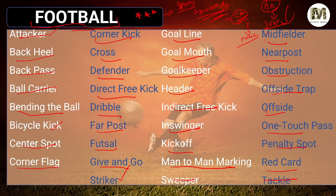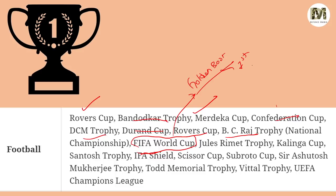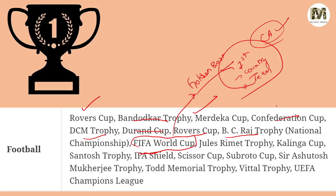Football cups and trophies: Rovers Cup — you will see it in previous year questions — Bandodkar Trophy, Merdeka Cup, Confederation Cup, DCM Trophy, Durand Cup, BC Raj Trophy, FIFA World Cup. From FIFA, what becomes important is the Golden Boot Award, who it was given to, who is the number one player and from which country they belong. Also: Jules Rimet Trophy, Kalinga Cup, Santosh Trophy, IFA Shield, Scissor Cup, Subroto Cup — asked many times — Sir Ashutosh Mukherji Trophy, Todd Memorial Trophy, Vittal Trophy, and UEFA Champions League.